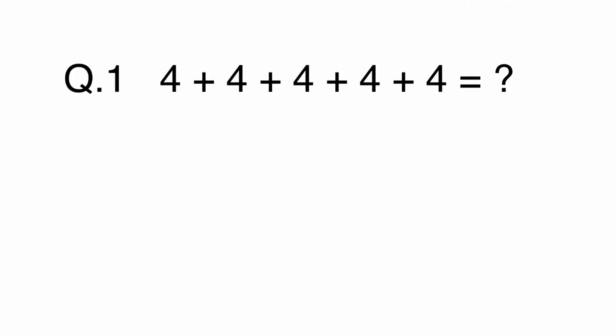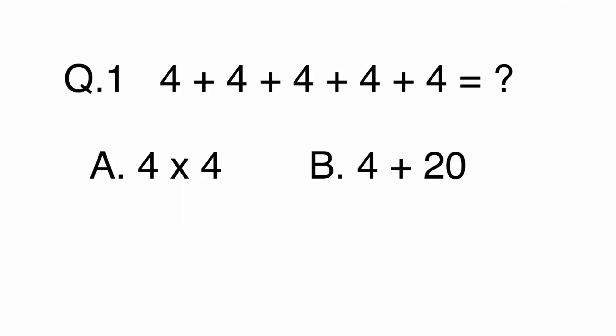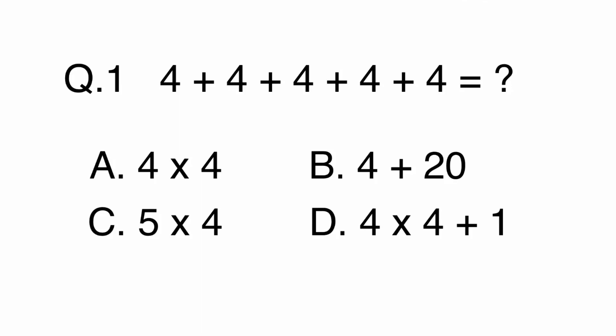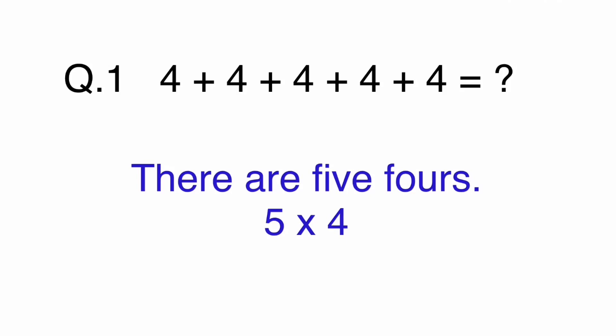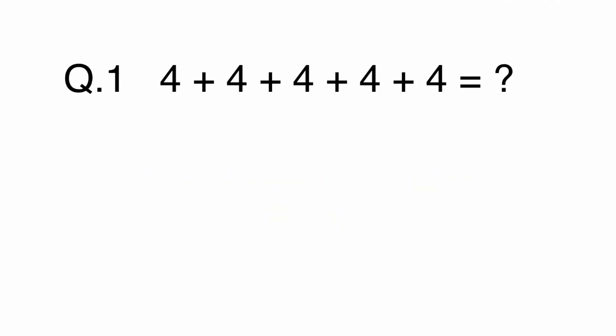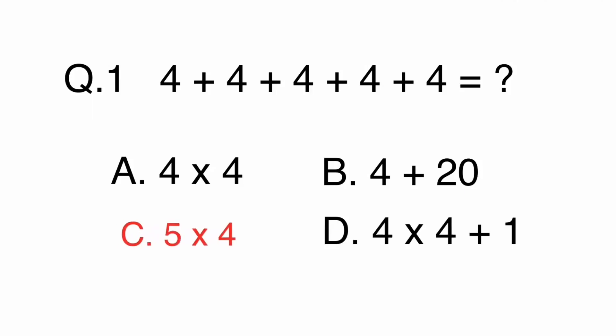Question 1. What is 4 plus 4 plus 4 plus 4 plus 4? A. 4 times 4. B. 4 plus 20. C. 5 times 4. Or D. 4 times 4 plus 1. In this question there are five 4s, so it is 5 times 4. The answer is C, 5 times 4.